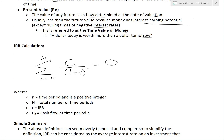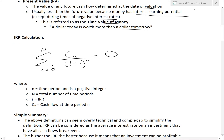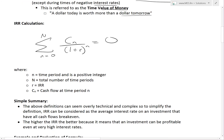The IRR calculation is basically the sum from n equals zero up to capital N of C_n over (1 plus R) to the power of n, set equal to zero. Here, n is a time period and is a positive integer — for example, year one, year two — and N is the total number of time periods, for example 30 years. R is the internal rate of return, i.e., the interest rate.